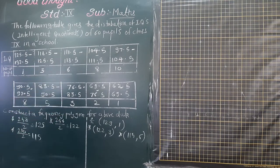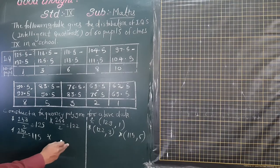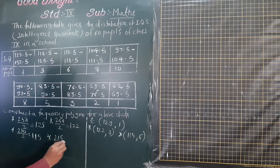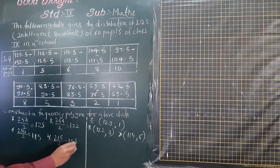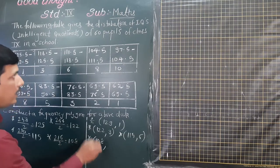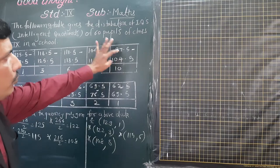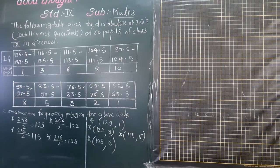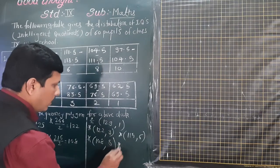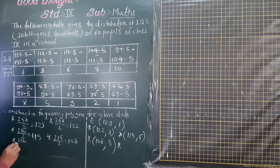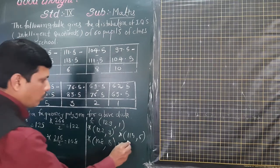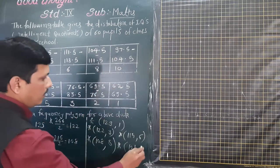The sum for the next interval is 216 divided by 2, which equals 108. So our next point is 108 with a frequency of 8. After that, 97.5 plus 104.5: the sum is 202 divided by 2, which equals 101. So the next plotting point is 101 and 8.